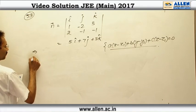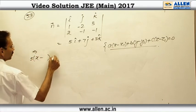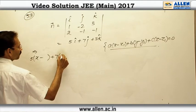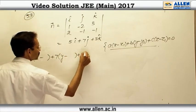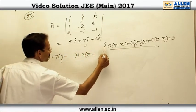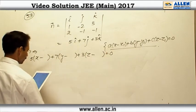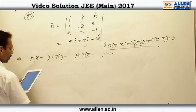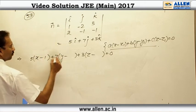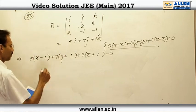Here A is 5, so 5(x - x1), B is 7, so 7(y - y1), and C is 3, so 3(z - z1) = 0. The point is (1, -1, -1). This is the desired plane.